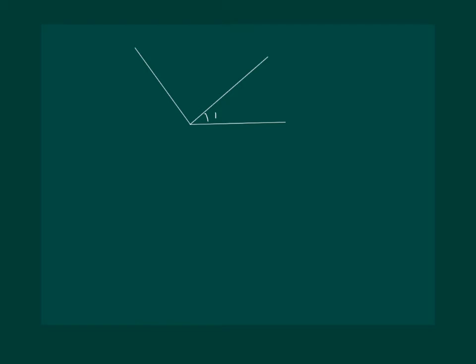Now look at these two angles — angle 1 and angle 2. Clearly, angle 1 and angle 2 both have a common vertex. Also they have a common arm. The non-common arms of both angles are on either side of the common arm: one is on this side and the other is on the other side.